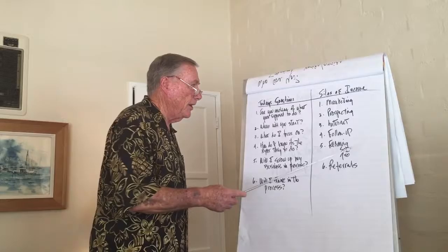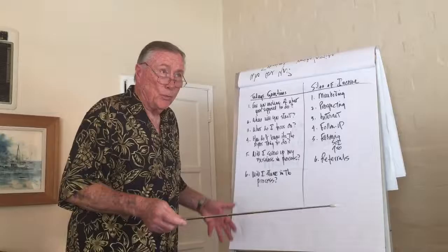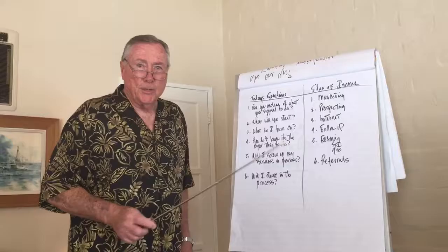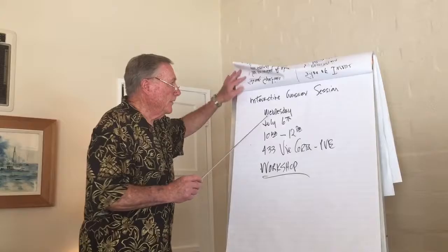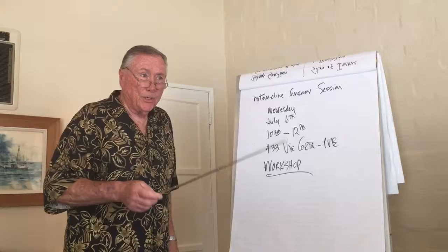These questions apply to the silos of income. What you're supposed to be doing—your marketing, prospecting, how you're going to approach and handle the internet, the follow-up, which is where the consumers live. Where are they at? Where's the current ones? Where's the long-range ones? What your farming is—are you going to farm in your sphere or do a geographical farm? What about referrals and how are you going to handle it? All things that we will be discussing at our workshop on Wednesday.